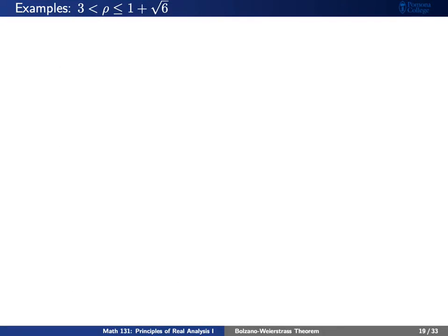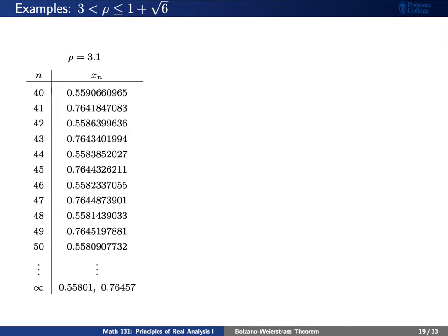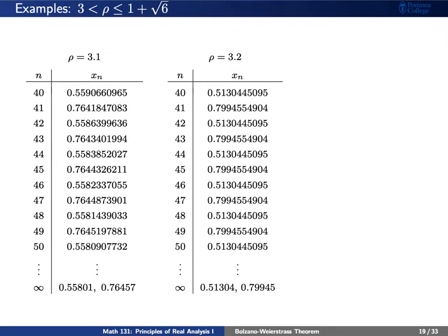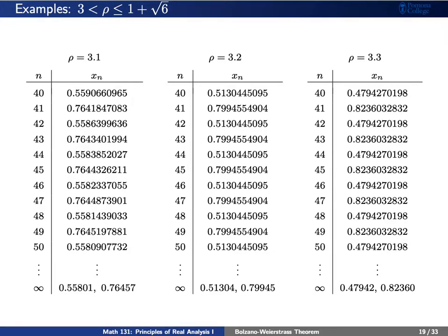Looking at rho equal to 3.1, the 40th through 50th terms show a pattern: our numbers are bouncing back and forth between two limits, approximately 0.558 and 0.765. The same thing happens if we increase rho to 3.2, where numbers bounce between 0.513 and 0.799. And if we increase rho to 3.3, we again see the same type of pattern, bouncing between approximately 0.479 and 0.823.